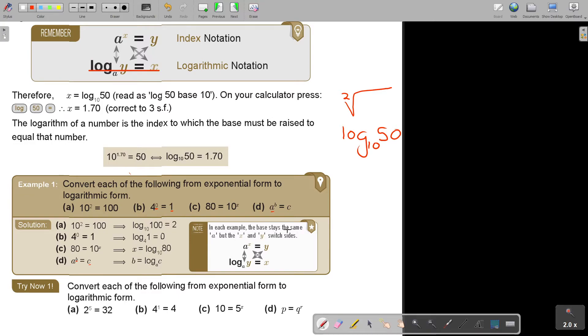So in each example, the base stays the same, A, but the X or Y. Yes, the A, the base, but the X and the Y switch sides. That's basically what's happening. I'm just going to give you two. It's really important that you can work with this. So let's do number A, and I think let's do number D, and see if you can convert it to logarithmic form.